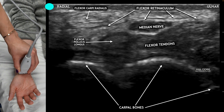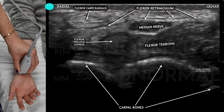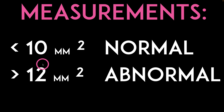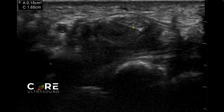For measurements, we want to measure the area in millimeters squared of the median nerve. If the median nerve area is less than 10 millimeters squared, that's considered normal. If it's greater than 12, it's considered abnormal — 12 is more of a specific number, and 10 is more of a sensitive number. For those that fall in the middle, use your clinical picture and other factors to determine if it is abnormal for that patient. This is an abnormal example: the median nerve area here is 15 millimeters squared, which is abnormal.